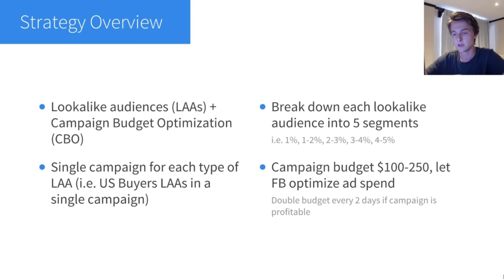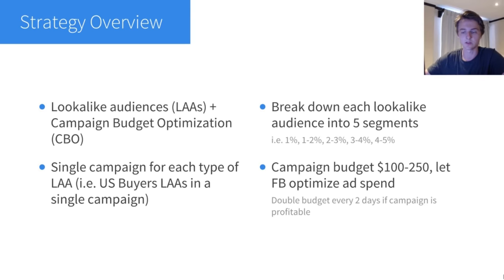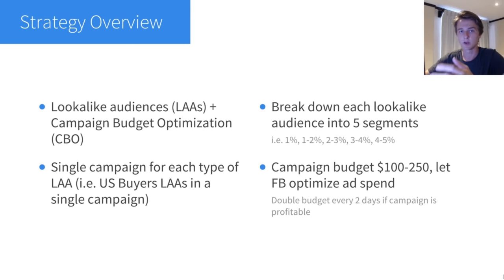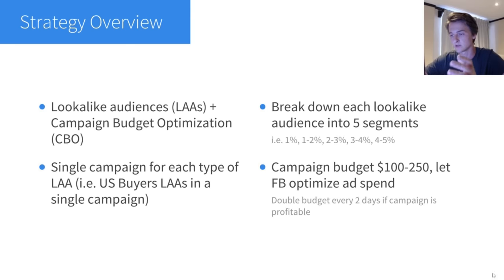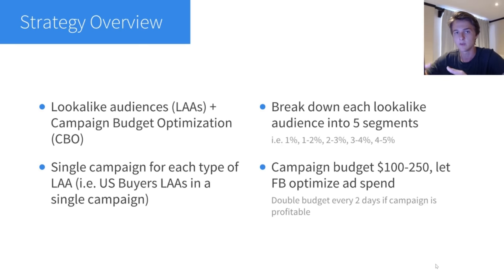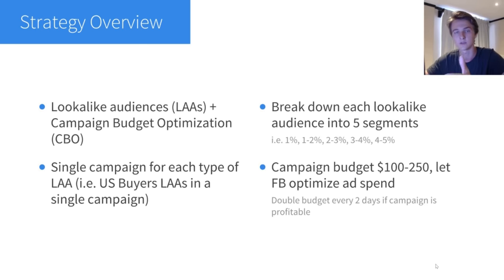The strategy is really powerful. Here's how you'll want to set it up: have a single campaign for each lookalike audience type and each country individually. For example, have a single campaign for the buyer lookalikes for the US, and a separate campaign for buyer lookalikes for the UK. Segment by country and type of lookalike. Then break down each lookalike audience into five segments — for example 1%, 1–2%, 2–3%, 3–4%, and 4–5% — which avoids overlap and lets you test different levels.